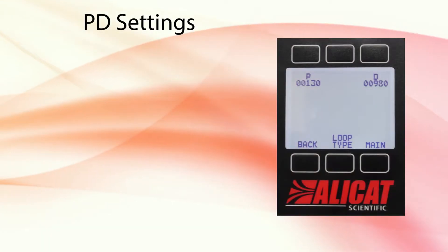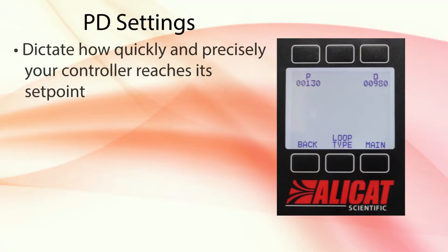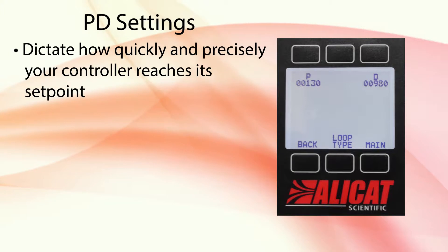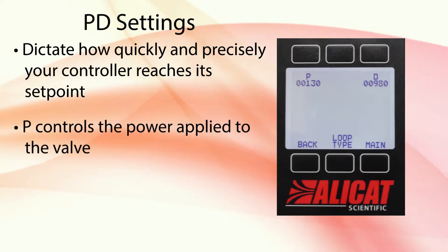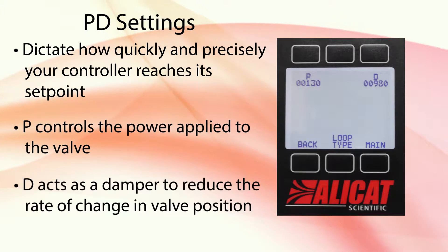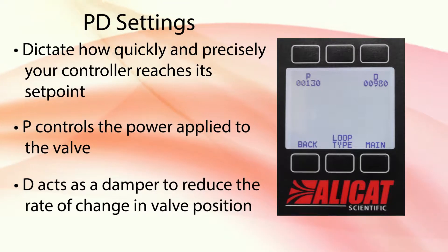The P-D settings for your AlleyCat controller valve dictate how quickly and precisely your controller reaches its setpoint, with P controlling the power applied to the valve and D acting as a damper so as to not overshoot your setpoint.